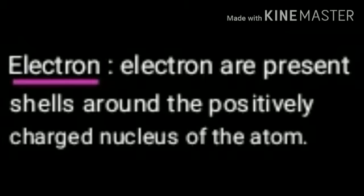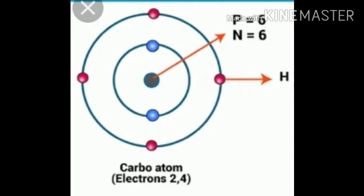Let us observe the carbon atom. Carbon atom has two cells. First one is inner cell, second one is outer cell. We observe the inner cell has two electrons, and the outer cell has four electrons.